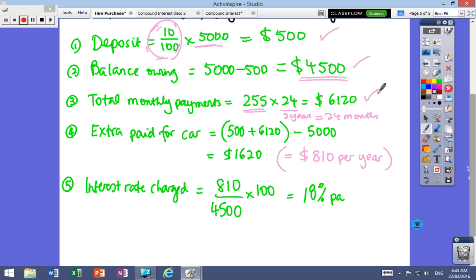And next step is, how much have you paid for the car? Well, you've paid the deposit and then you've paid the monthly payments. So they're the amounts you've actually paid for the car. So we're calculating the extra paid. So that's the amount you've paid for the car. That's what the car was worth. So $1,620 is how much extra you've paid. And because we've paid it off over two years, that's equal to $810 each year.